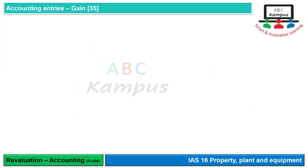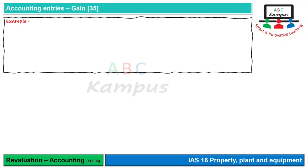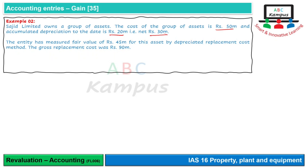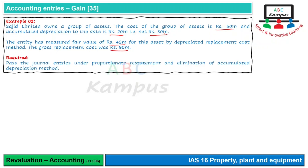Gain की situation में accounting entries: Example two - Sajid Limited owns a group of assets. Cost: 50 million, accumulated depreciation: 20 million, net: 30 million। Entity ने fair value measure की which is 45 million - यानि gain है। By depreciated replacement cost method gross replacement cost 90 million है।